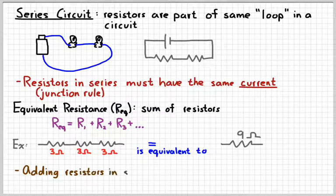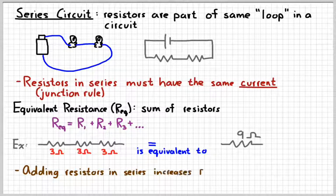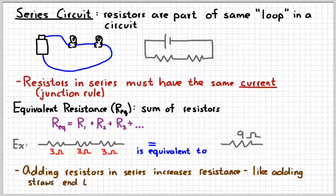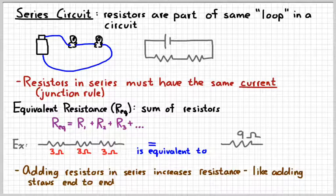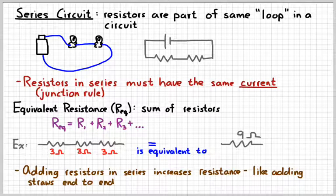When you add resistors in series, you increase the resistance. An analogy is like adding straws together end to end. If you take two straws and tape them together so that the first one ends where the second one begins, and then try to drink something through it, it's going to be really difficult. Resistors are the same way — it's difficult to push charges through resistors when you add them end to end in a series circuit.